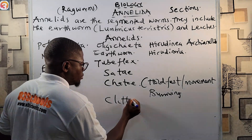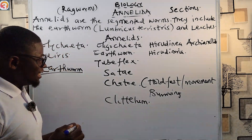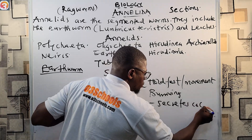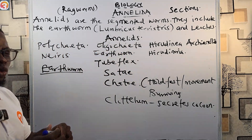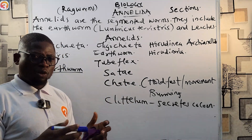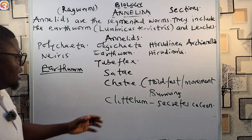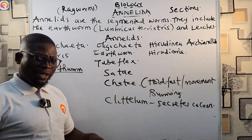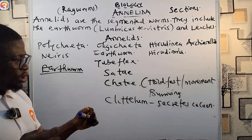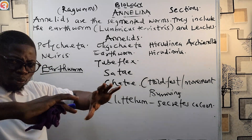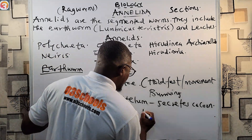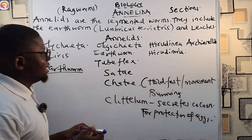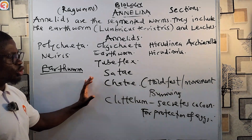The earthworm also has a clitellum. The clitellum secretes what we call the cocoon. This cocoon is used to protect the eggs of the annelid — for example, the earthworm's eggs.